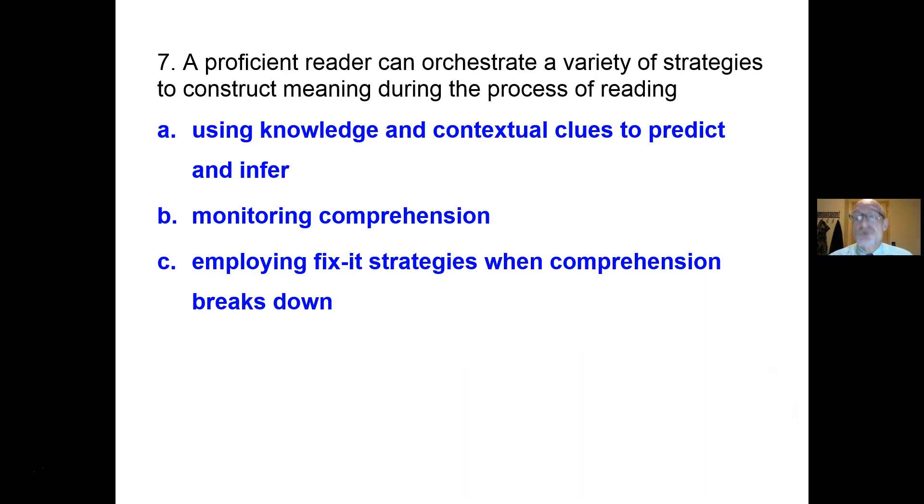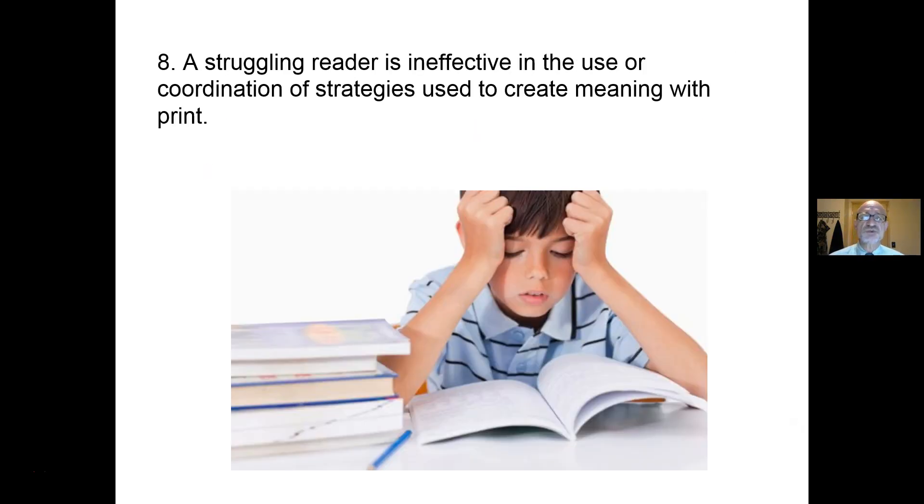According to the neurocognitive model, a proficient reader can orchestrate a whole bunch of strategies to construct meaning. You're using knowledge and context clues to predict and infer, you're monitoring comprehension, and you're using fix-up strategies when comprehension breaks down. That's what proficient readers do.